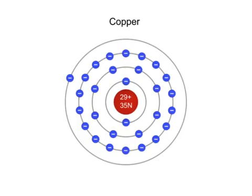The copper atom has 29 positively charged protons and an equal number of electrons in various shells orbiting its nucleus. After filling the first shell with two electrons, the second with eight, the third shell with its maximum 18 electrons, the outermost shell of copper is occupied by a single electron.